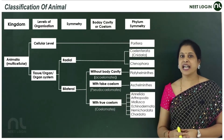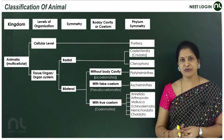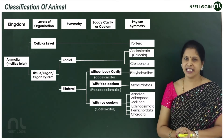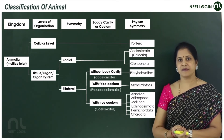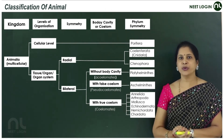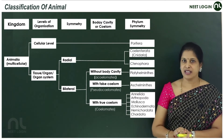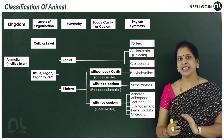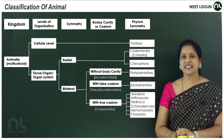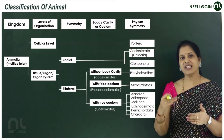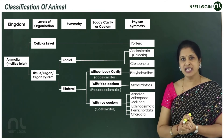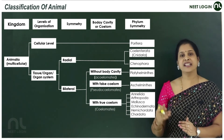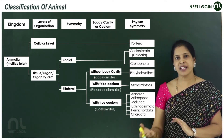Animals are classified based on fundamental features like levels of organization, symmetry, and coelom. All animals are multicellular — they belong to the kingdom Animalia or Metazoa. No animal is unicellular. In the levels of organization, one is cellular — a very primitive level — and the others are tissue, organ, and organ system levels.